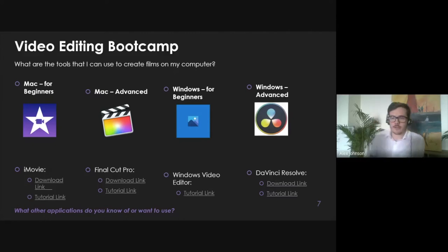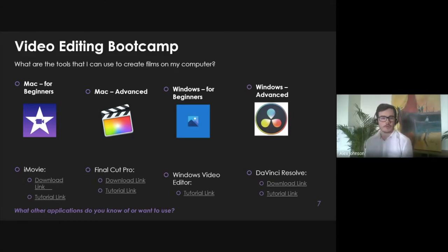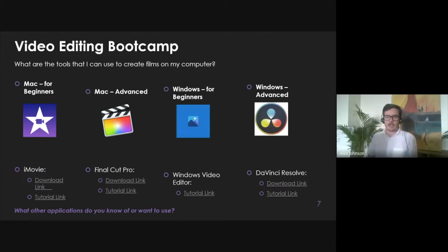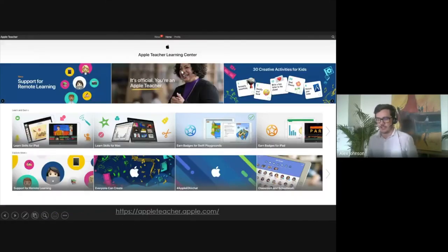GarageBand is great for editing audio especially — for example if you wanted to create a narration for your video. Adobe Premiere is fantastic too, though the biggest drawback is the price tag. CapCut on Android is great for editing fast, beautiful, engaging videos but you don't have as much control. iMovie is going to meet about 95% of everyone's needs and is very easy to learn.